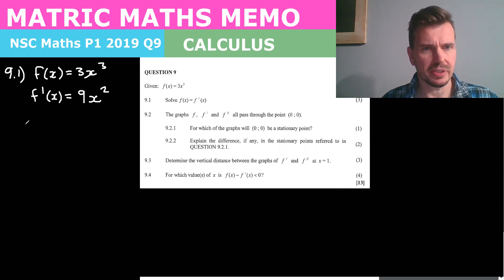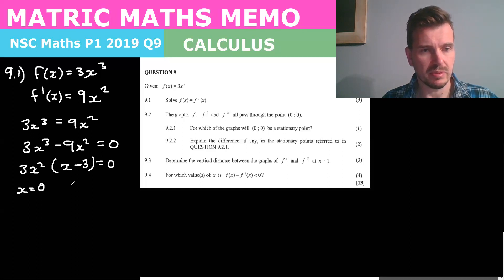Now we make these equal to each other. 3x cubed equals 9x squared. We take the 9x squared across, make them equal to 0, take 3x squared out as a common factor and we get x minus 3 equals 0 and so we have x equals 0 or x equals 3.